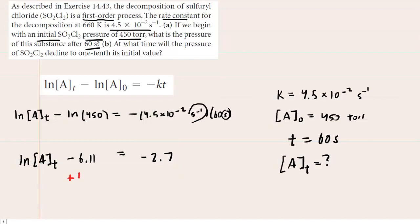Let's add 6.11 to both sides of this equation. So the right-hand side will become 3.41.